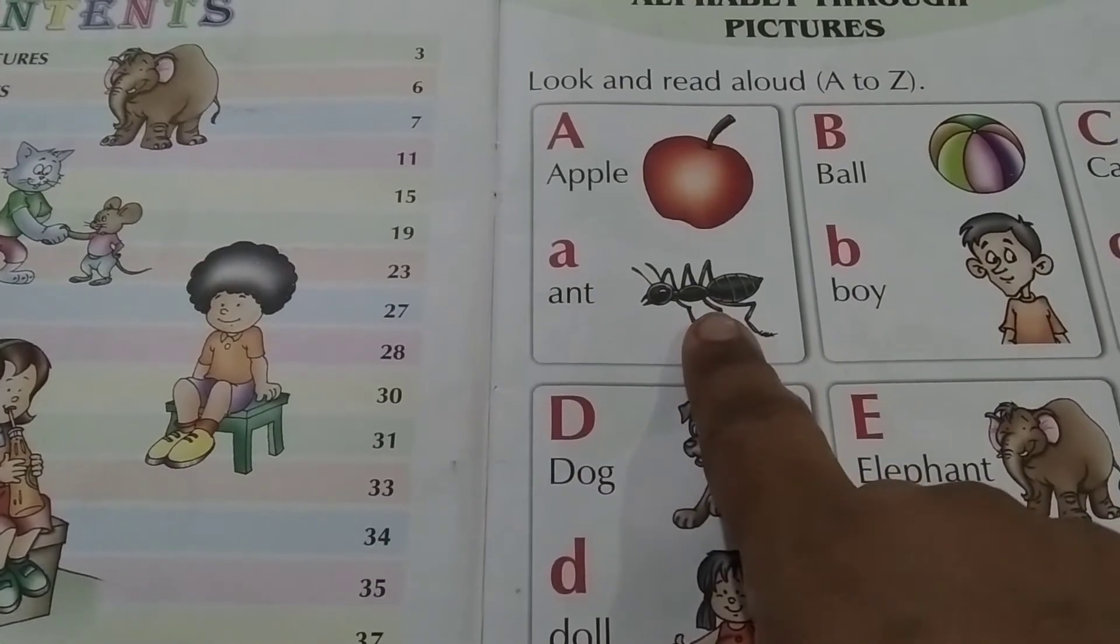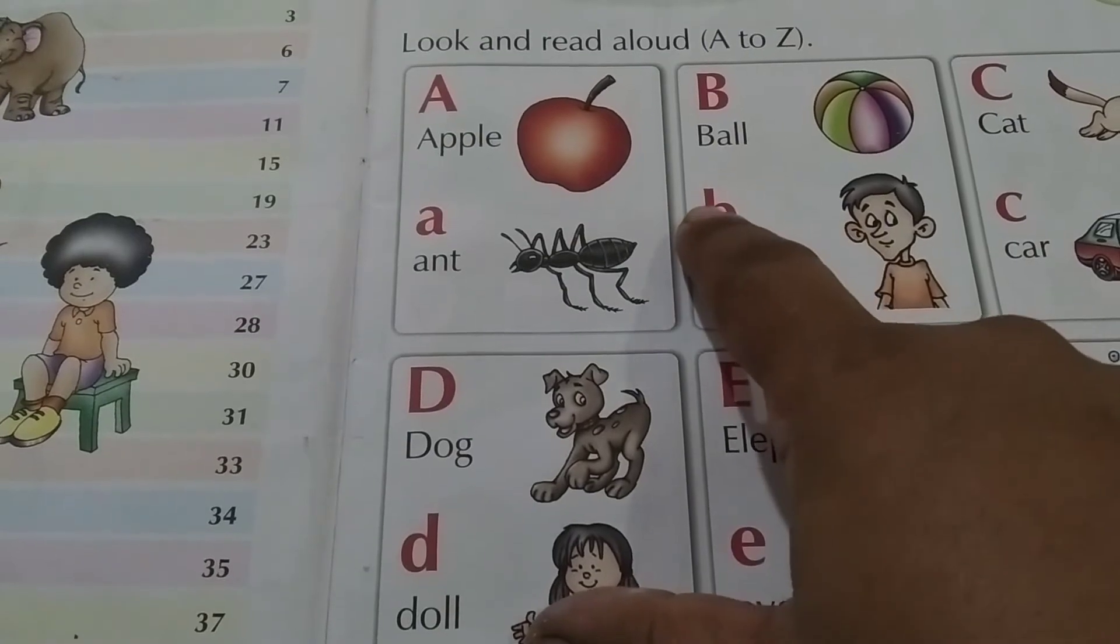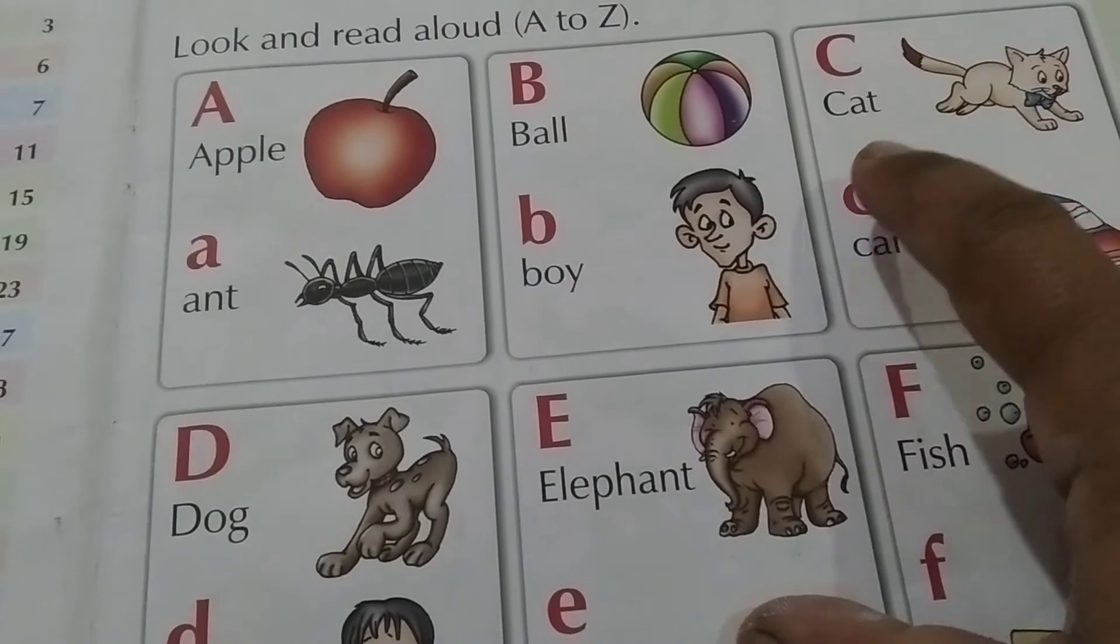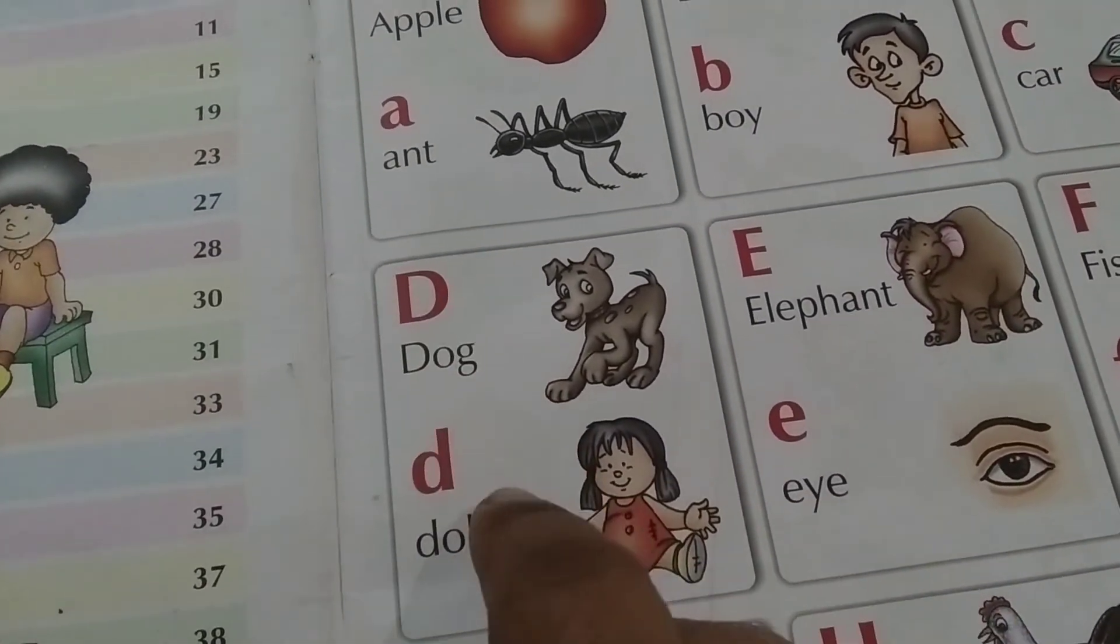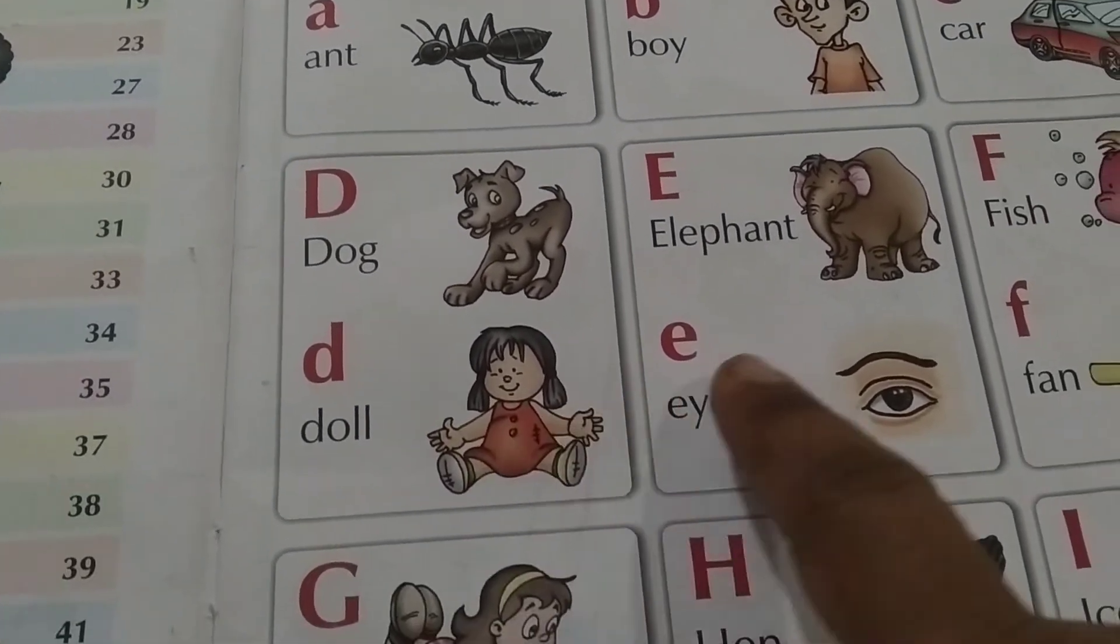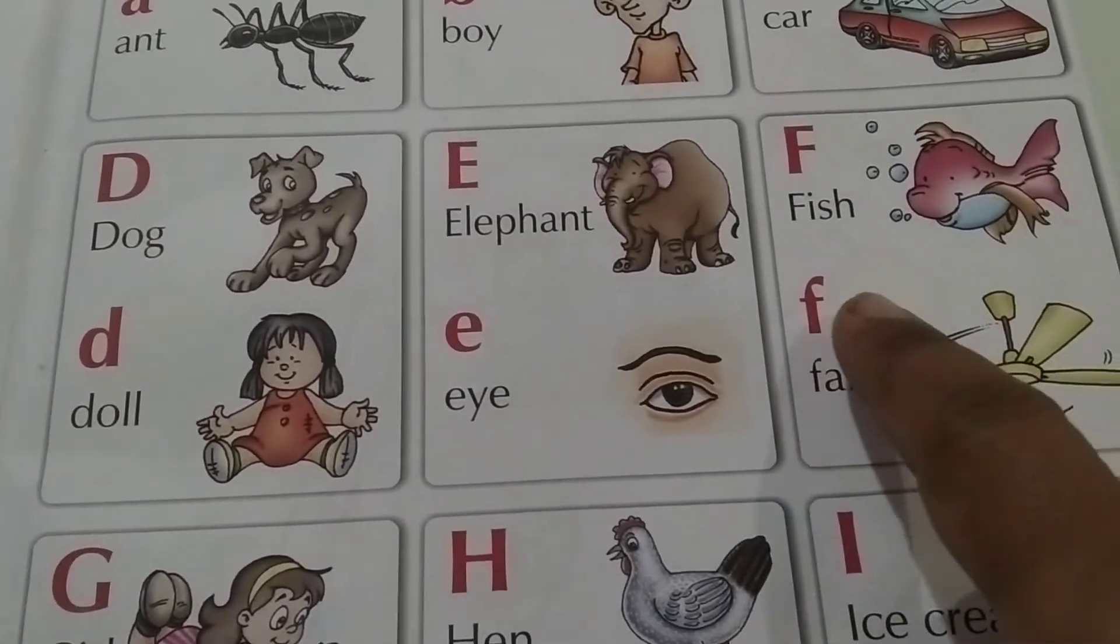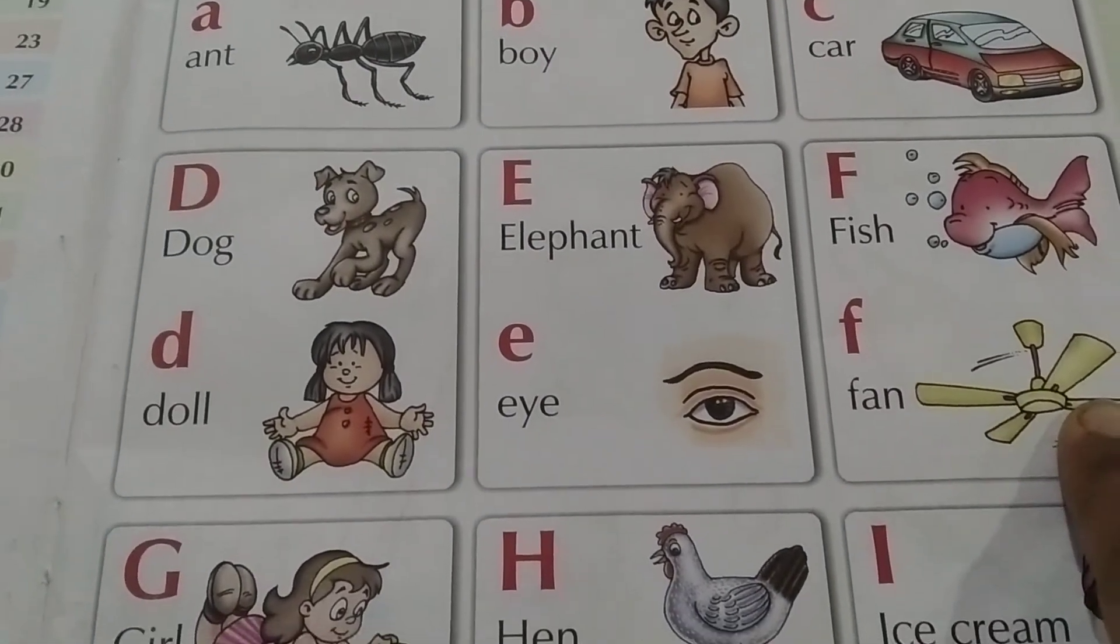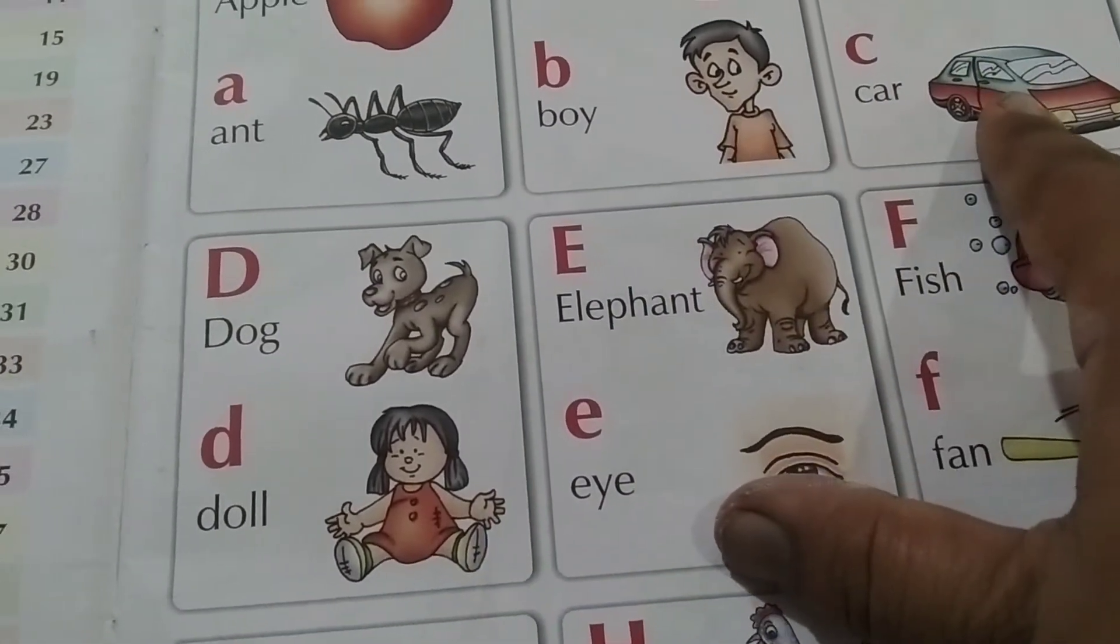Okay? A, A, Ant. A for Ant. B. B for Boy. C. C. C for Car. D. D for Doll. E. E for Eye. F. F for Fan. Understood children? A for Ant, B for Boy, C for Car, D for Doll, E for Eye, F for Fan.